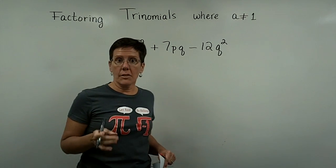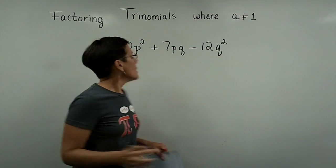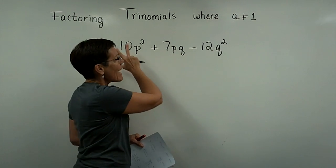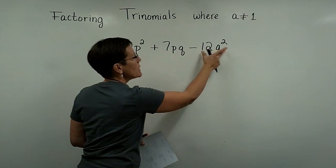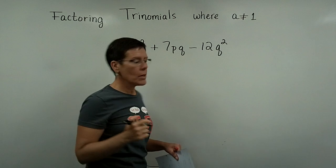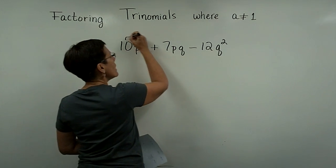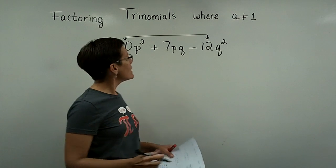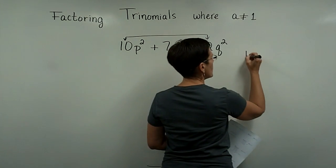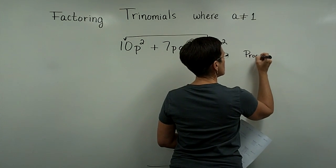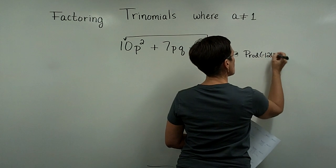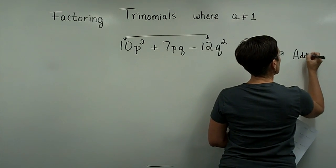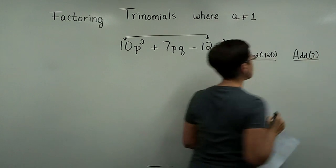I could think of this problem as a trinomial with a number other than 1 in front of the squared term and kind of ignore this p and q and this q squared for a moment and still use the process that I was talking about. So I'm looking for two numbers whose product is a negative 120, and I want those two numbers to add to be a positive 7.